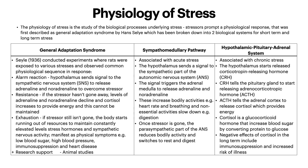This is broken down into two systems. So you have the sympathomedullary pathway, which is associated with acute or short-term stress. The hypothalamus sends a signal to the sympathetic part of the autonomic nervous system (ANS). The signal triggers the adrenal medulla to release adrenaline and noradrenaline. This increases bodily activity such as heart rate and breathing, while non-essential activities slow down such as digestion. Once the stressor is gone, the parasympathetic part of the ANS reduces bodily activity and switches to rest and digest.